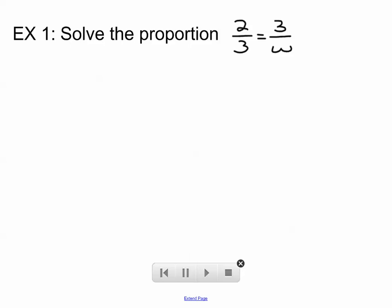So let's solve this proportion. Let's use the cross-product property. If 2 thirds is equal to 3 over W, then 2 times W should be equal to 3 times 3. Those are the cross-products. 2 times W, 3 times 3. We can simplify both sides. 2W equals 9, and divide both sides by 2. So W equals 9 halves. Pretty straightforward.